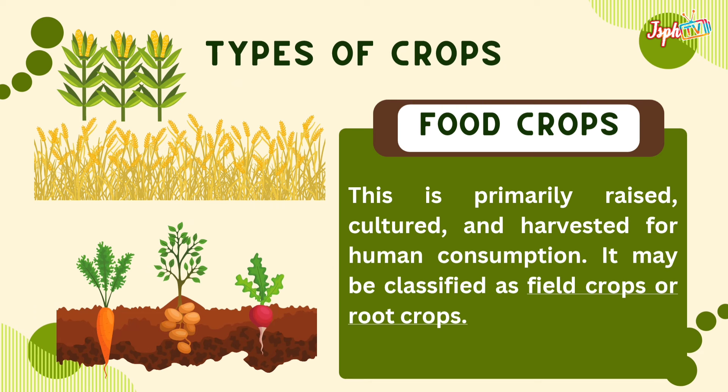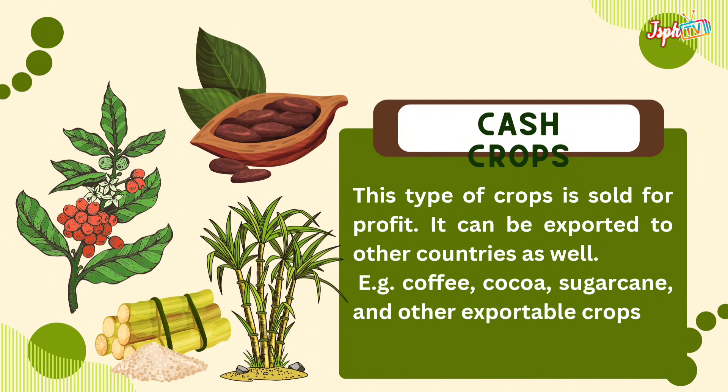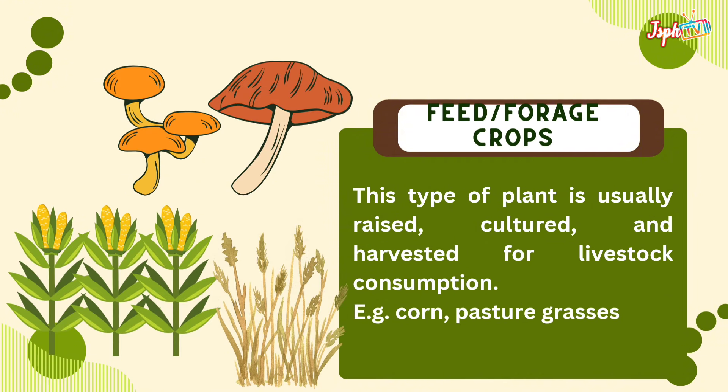There are types of crops. Food crops are primarily raised, cultured, and harvested for human consumption, classified as field crops or root crops. Cash crops are sold for profit and can be exported to other countries, like coffee, cocoa, and sugarcane. Forage crops are raised, cultured, and harvested for livestock consumption, like corn and pasture grasses.